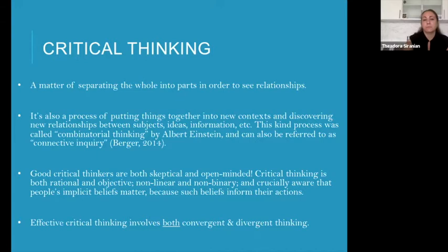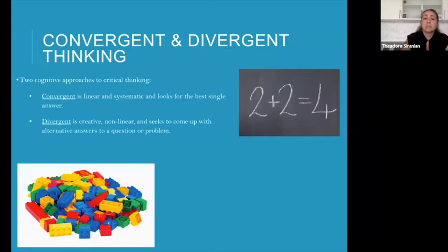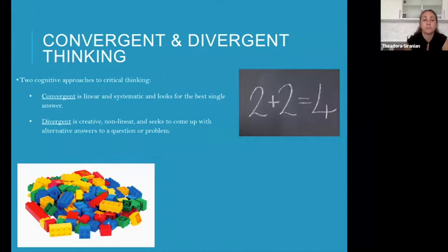What is convergent and divergent thinking? There are two cognitive approaches to critical thinking. Convergent is linear and systematic — it looks for a single best answer. An example is a simple math equation: two plus two equals four. Another example would be a multiple choice question on a standardized test where you choose the best single answer. Divergent thinking is different — it's creative, it's nonlinear, it seeks to come up with alternative answers. If I gave everybody the same pile of Lego blocks, invariably many of you would come up with a multitude of different structures. They're not mutually exclusive strategies; often people benefit from using them in tandem.